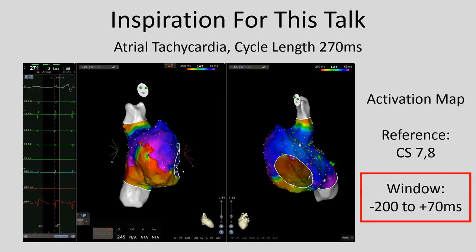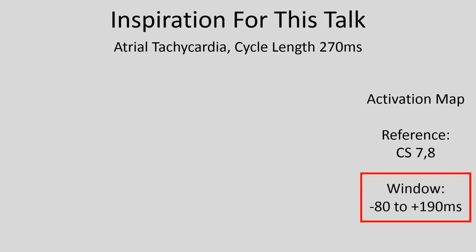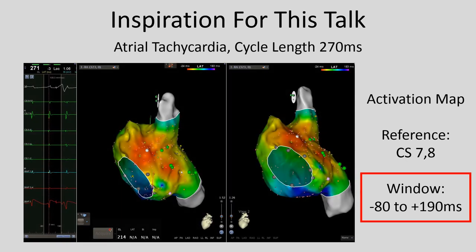We said maybe we needed to create a later window, so we created a window of minus 80 to plus 190 milliseconds around our coronary sinus reference electrogram and came up with a new map. Now we had red areas on the septum — a broad area of red to orange on the septum, but not really in any pinpoint location, and no early meets late component. When we did entrainment near the valve, it again showed that we were not right at the circuit or tachycardia.